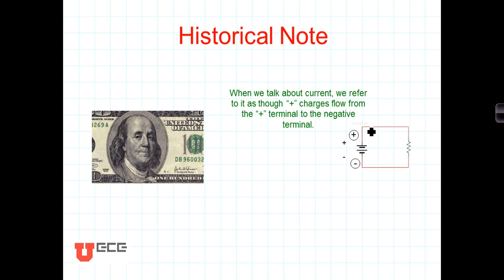Benjamin Franklin is typically credited with making the decision: are we going to talk about positive charge flowing or negative charge flowing? At that time they were unable to distinguish between the two, so he guessed — and unfortunately he guessed positive charge flowing.